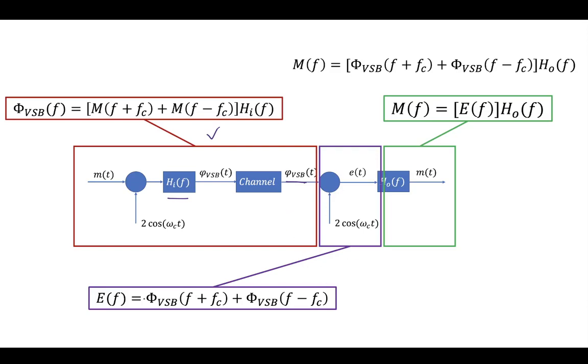Then in this stage, we have the demodulation begins. We take the VSB signal and apply a coherent demodulation cosine. This gives us an ET signal that looks like this. It's a vestigial sideband signal that's been moved by plus or minus FC, so it now has baseband components again.